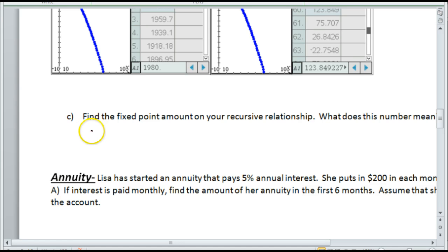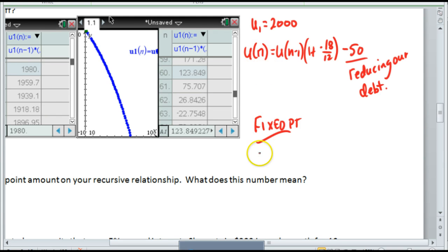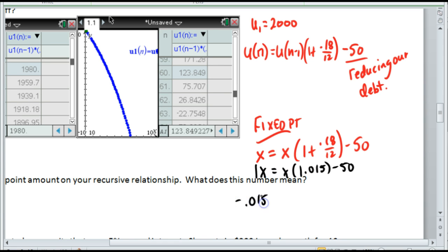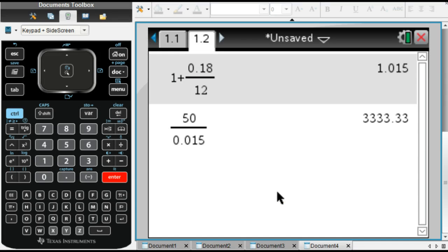Now the fixed point for this one is if I let my now equal to my previous and try to solve this out. When I solve this out, I'm going to find a decimal for this, and I'm going to subtract this x from this x over here. I'm going to get all my x's on one side. This is 1x minus this times x. I'm going to be left with negative 0.015x is equal to negative 50. My fixed point would be the result of this.